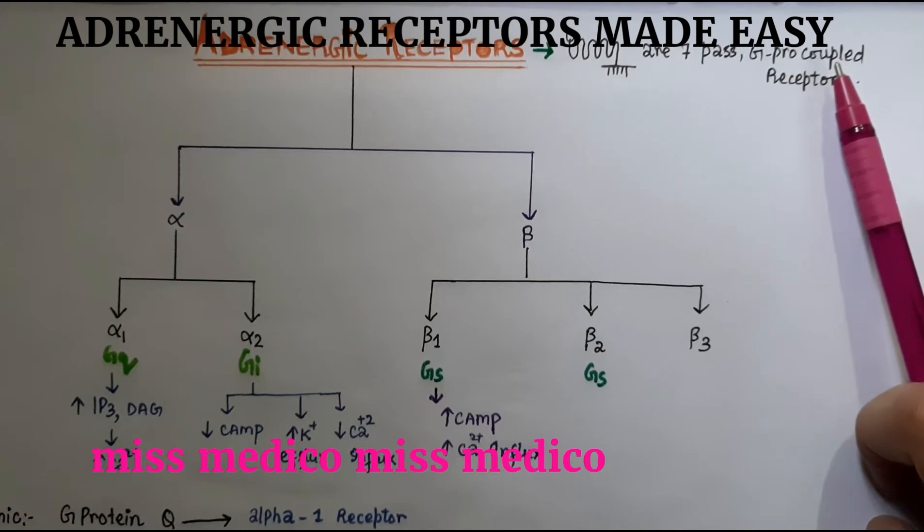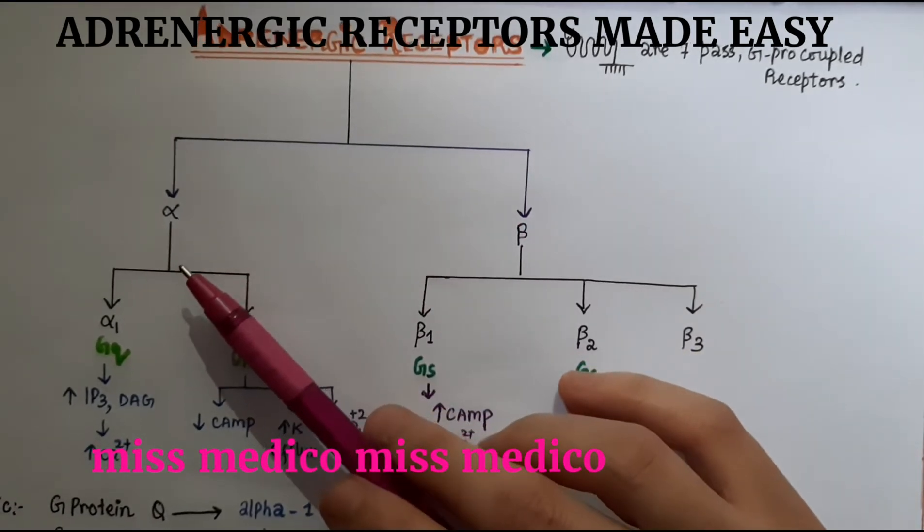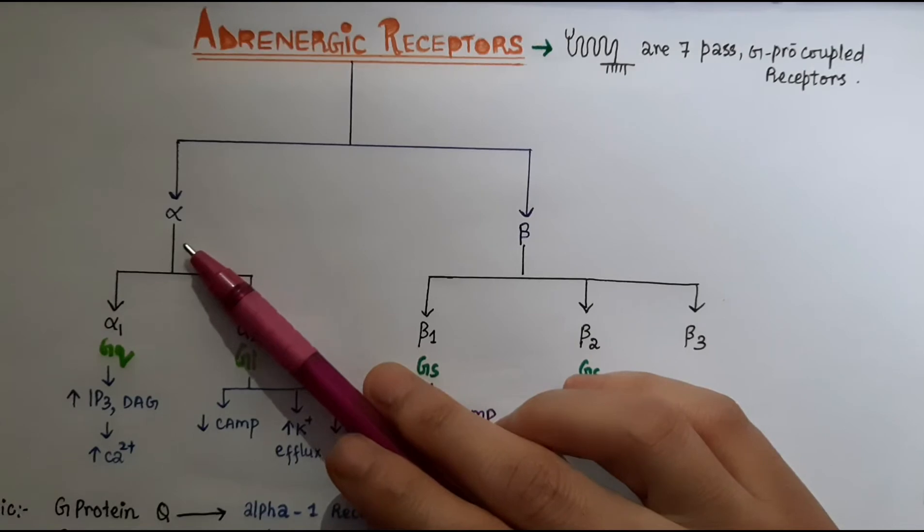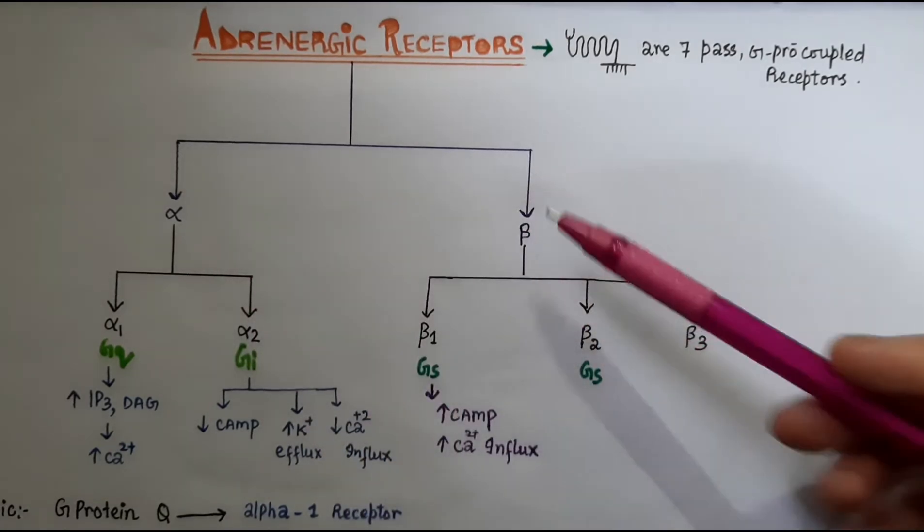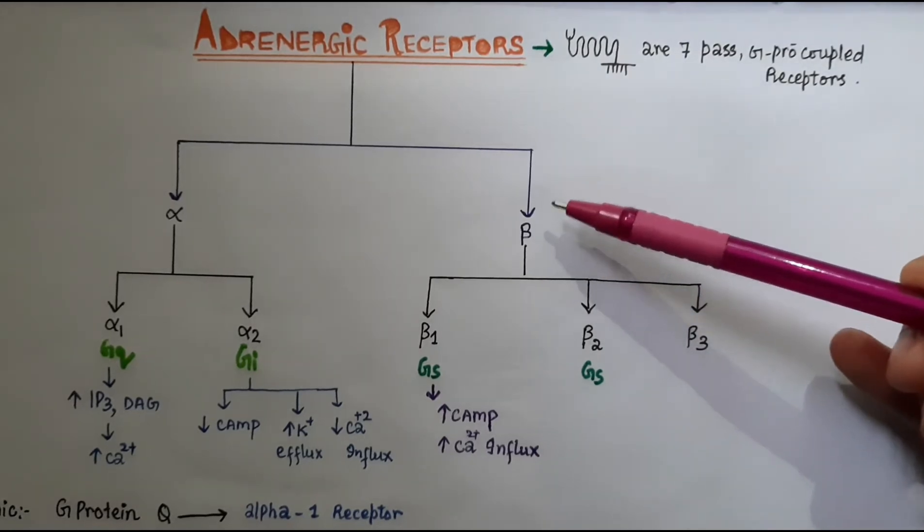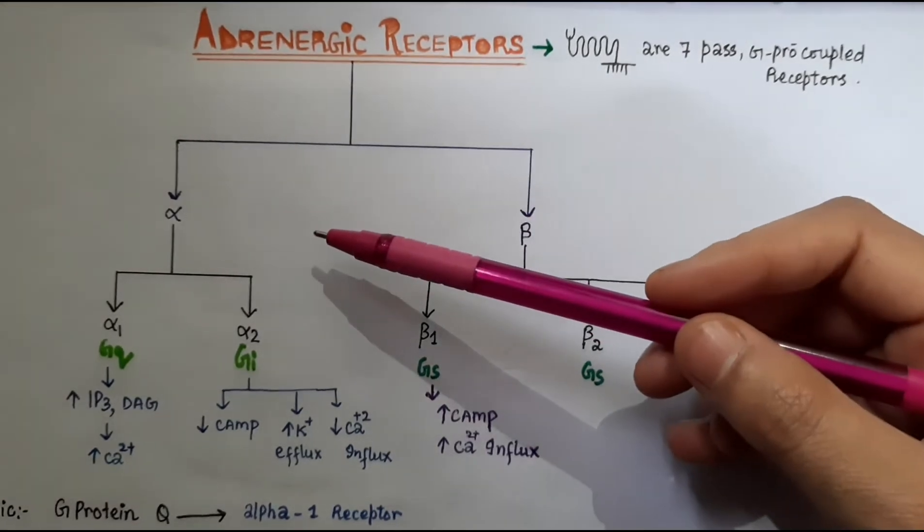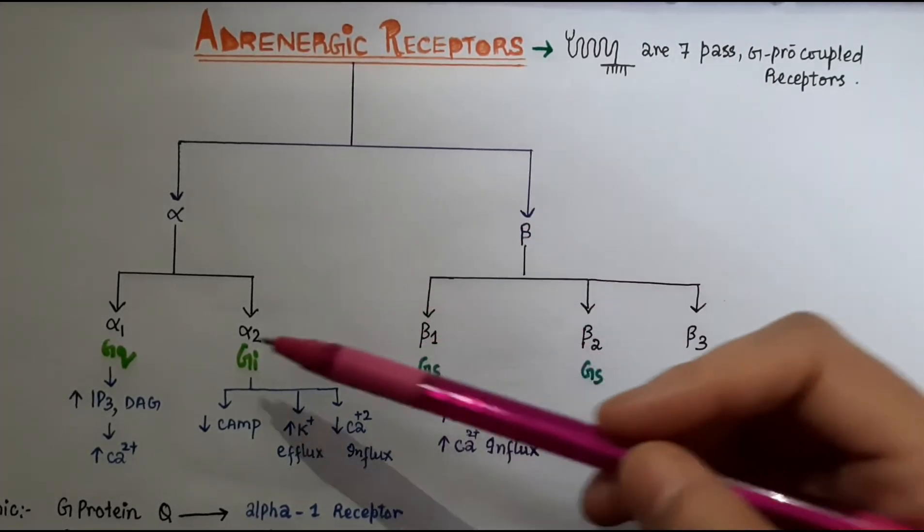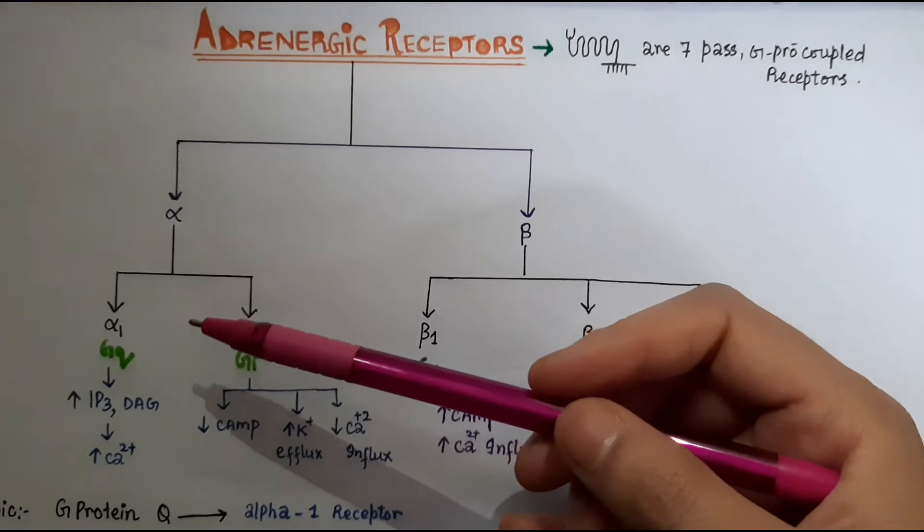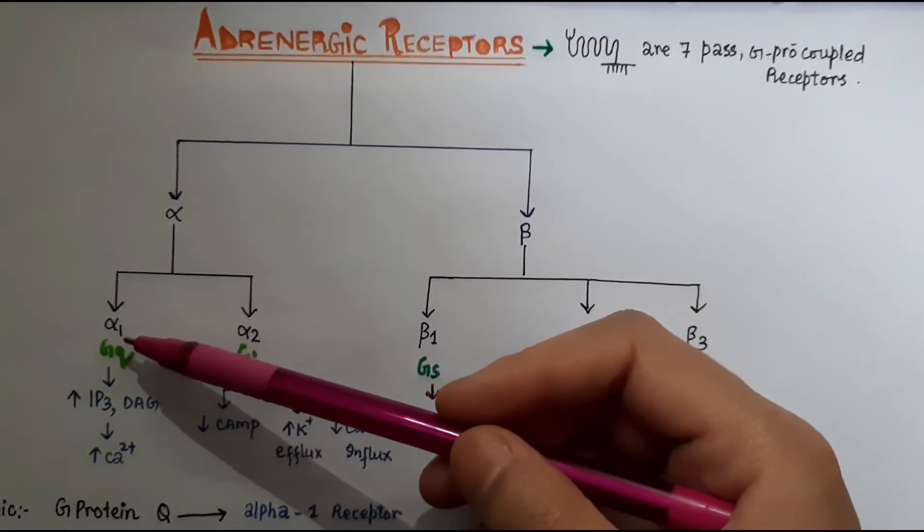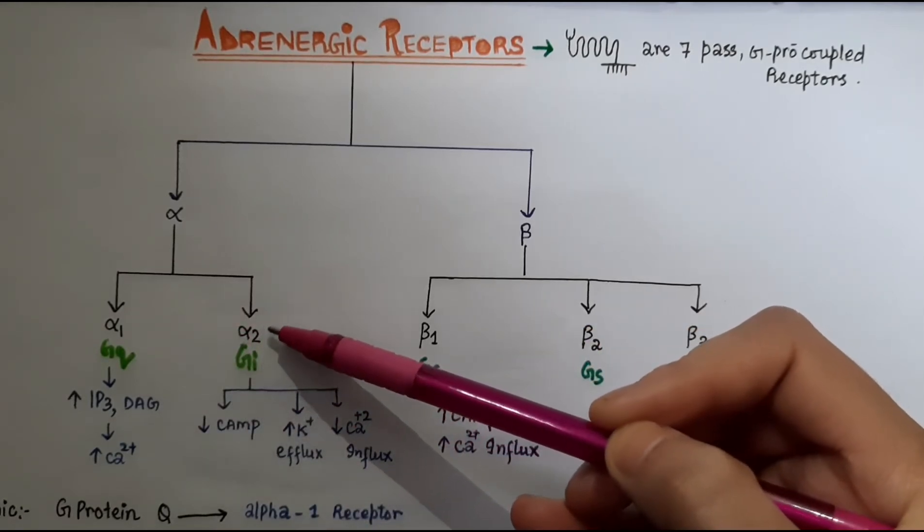These receptors are classified into two categories: alpha adrenergic receptors and beta adrenergic receptors. Alpha adrenergic receptors are further divided into alpha-1 and alpha-2.